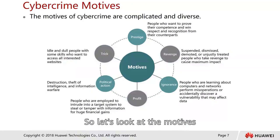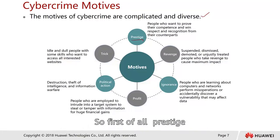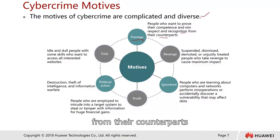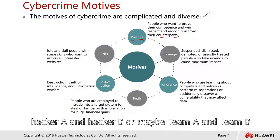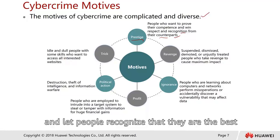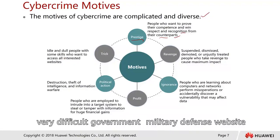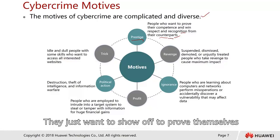What are the motives of cybercrime? They are very complicated and diverse. First, prestige — people who want to prove their competency and win respect and recognition from their counterparts. For example, hacker A vs. hacker B, or team A vs. team B, just wanting to show they can hack into a very difficult government or military defense system or website.